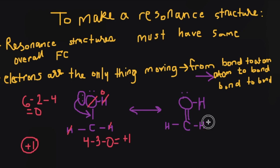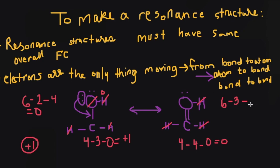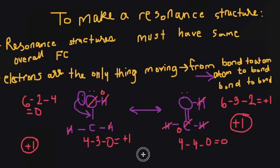Now let's look at this second resonance structure. Again the hydrogens are going to be zero. Carbon has four valence electrons minus four bonds (double bond to oxygen and two bonds to hydrogen) minus no lone electrons — overall formal charge is zero. Oxygen has six valence electrons minus three bonds (two to carbon, one to hydrogen) minus these two electrons, giving us a positive one. So carbon and hydrogen all have a formal charge of zero and the oxygen has a positive one. Adding together the formal charges of all atoms gives us positive one from the oxygen. Because the overall formal charges of these shapes are the same, these are resonance structures.